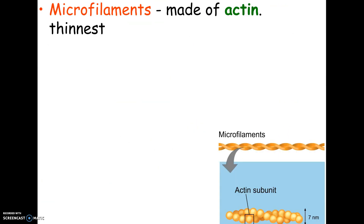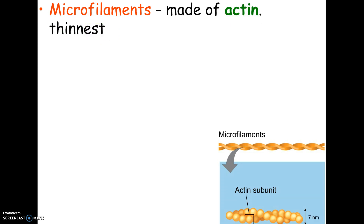The second component of the cytoskeleton is called microfilaments. Microfilaments are the smallest. They're 7 nanometers in size — the microtubules were 25 nanometers and were big and hollow. You don't have to know 7 nanometers, but you do need to know they're made of actin. If asked which is the smallest, the microfilaments would be the skinniest.